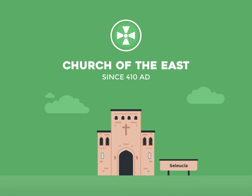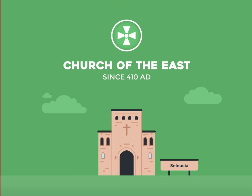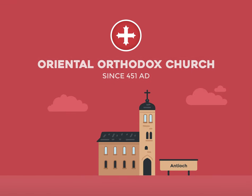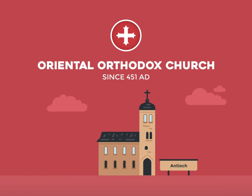Church of the East: an ancient church with unique liturgy and theology, mainly found in the Middle East and India. Oriental Orthodox Church: an ancient Christian group differing on the nature of Christ, with strong regional traditions.